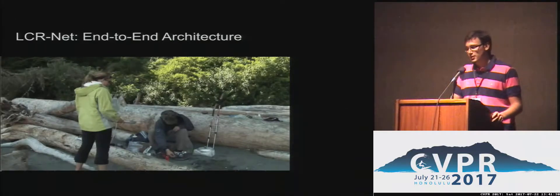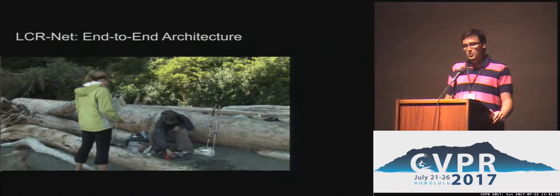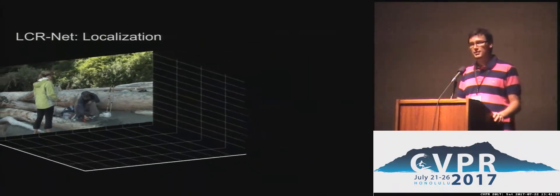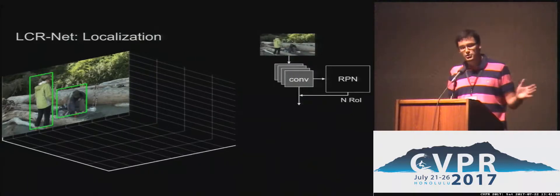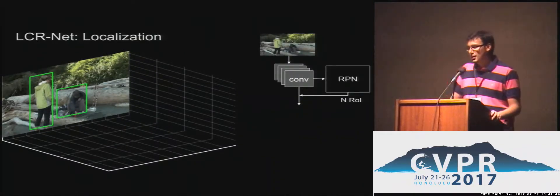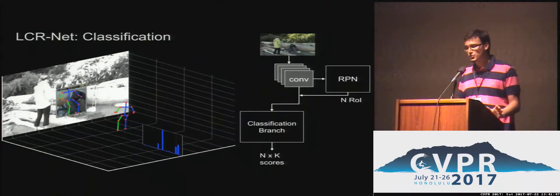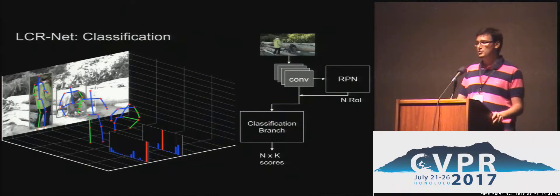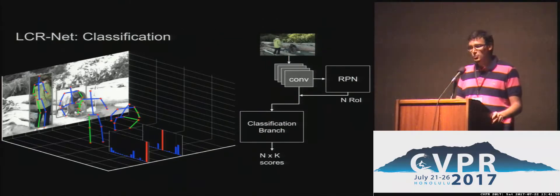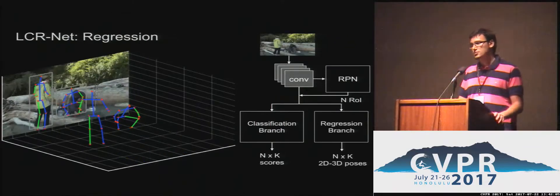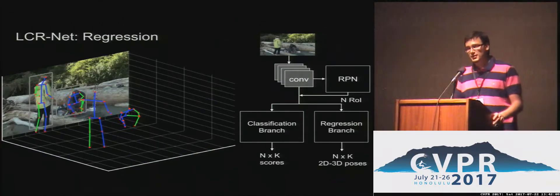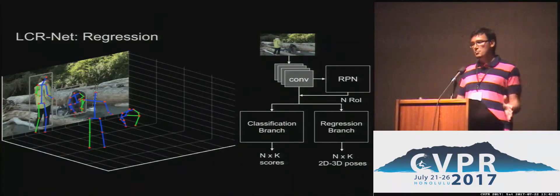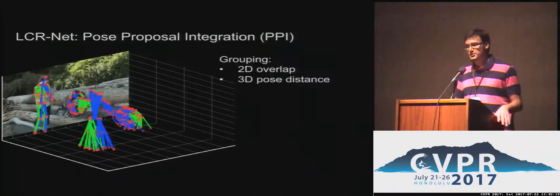Here is a brief overview of the architecture. Given an input image, we first have a region proposal network that selects N regions in the image — here we show only two regions for clarity. Then a classification branch scores the K anchor poses in the N regions of interest, obtaining N times K scores. For example, the anchor pose corresponding to a seated person obtains the highest score. After that, the regression branch refines the N times K 2D and 3D poses using class-specific regression, obtaining many pose proposals — 2D and 3D poses with associated scores.